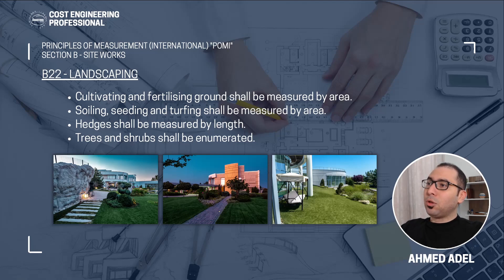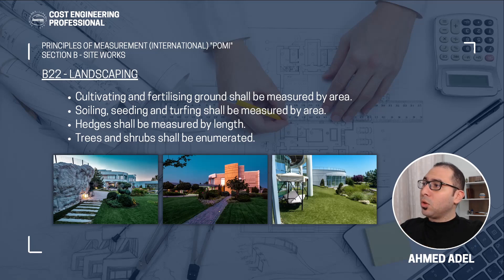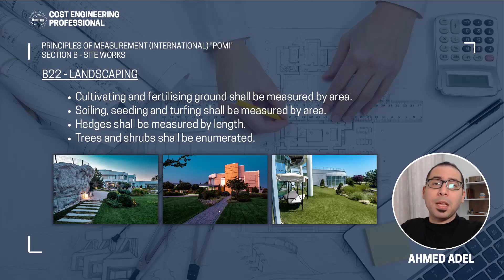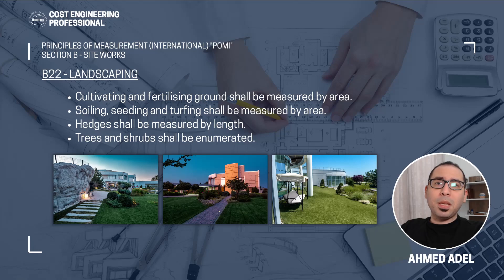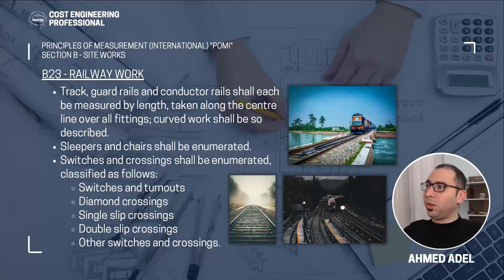Subsection B22 is landscaping works. Cultivating and fertilizing ground shall be measured by area. Soiling, seeding, and turfing shall also be measured by area. Hedges shall be measured by length. Trees and shrubs shall be enumerated. So for soft landscaping, most items — cultivating, fertilizing, soiling, seeding, turfing — are by area; hedges by length; and trees and shrubs by enumeration.